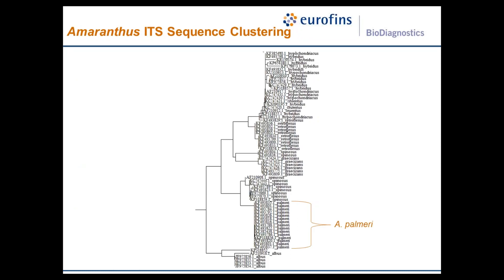This dendrogram shows the ITS sequence similarity of different amaranth species — just a small subset of the ITS sequences available in the database we use for comparison. Sequences located closer together are more similar than those located farther apart. You can see that the Palmer sequences cluster nicely together and there is good separation between the Palmer sequences and the ITS sequences from other amaranth species. That separation is important for high confidence in identifying a sequence as Palmer Amaranth.